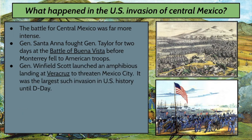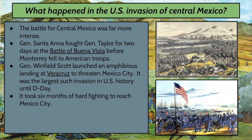Then, in a rather famous amphibious landing — amphibious means from water onto land — General Winfield Scott launched a massive amphibious landing at the Mexican port city of Veracruz. His intention was to threaten Mexico City: land his troops in Veracruz and march inland. It was the largest amphibious invasion in the history of the United States until D-Day during World War II on June 6, 1944. It took six months of hard fighting for U.S. troops to march inland to Mexico City, but eventually they did.